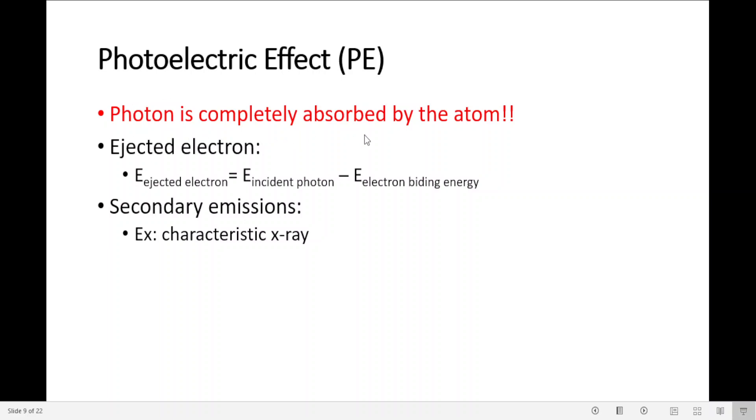So photon is completely absorbed by the atom. Ejected electron has energy which will be the incident photon energy minus the electron binding energy. One example of secondary emissions is the characteristic X-ray.